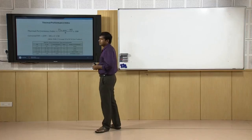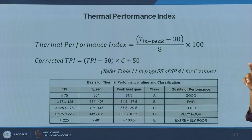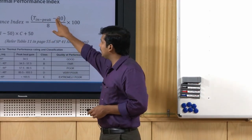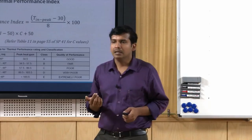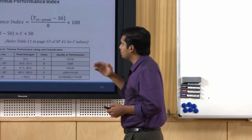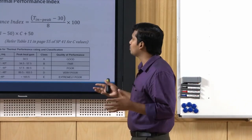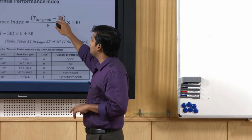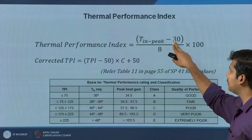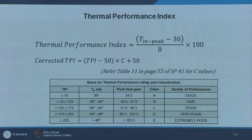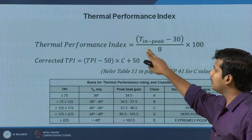The next indicator is the Thermal Performance Index (TPI). This equation gives T_in_peak — the inside peak surface temperature. For example, if peak surface temperature goes to 35 degrees: (35 minus 30) divided by 8, multiplied by 100. The value 30 comes from a series of calculations accounting for maximum heat gain for a specific wall system with a given fenestration area, representing the maximum comfort temperature. The value 8 reflects that when wall surface temperature rises above 30 degrees by 8 degrees (to 38 degrees), discomfort begins.